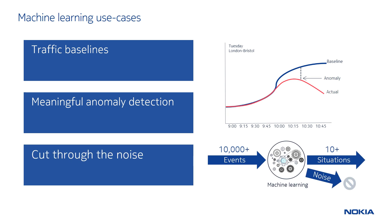A second use case relates to cutting through the noise in a network. Networks generate enormous amounts of event data, too much for operators to consume manually. Machine learning can be applied to correlate events and produce much more meaningful situations, reducing the event volume from tens of thousands of events to a handful of situations. Furthermore, unwanted noise can be dropped from the network and not presented to the operator at all.